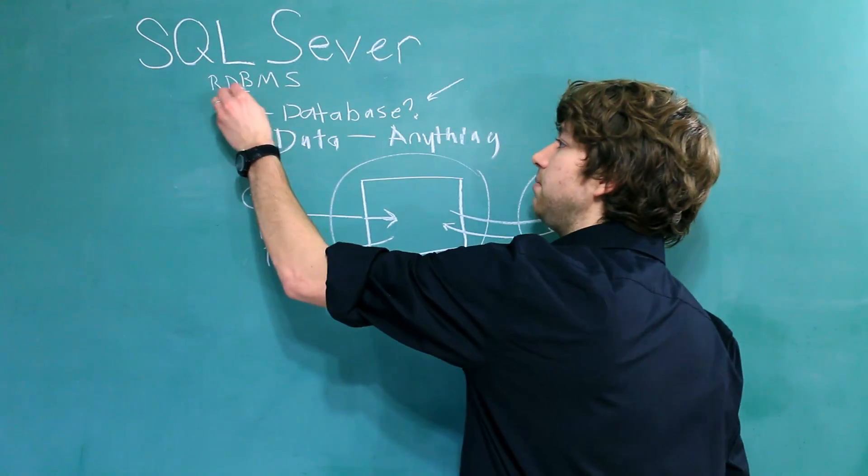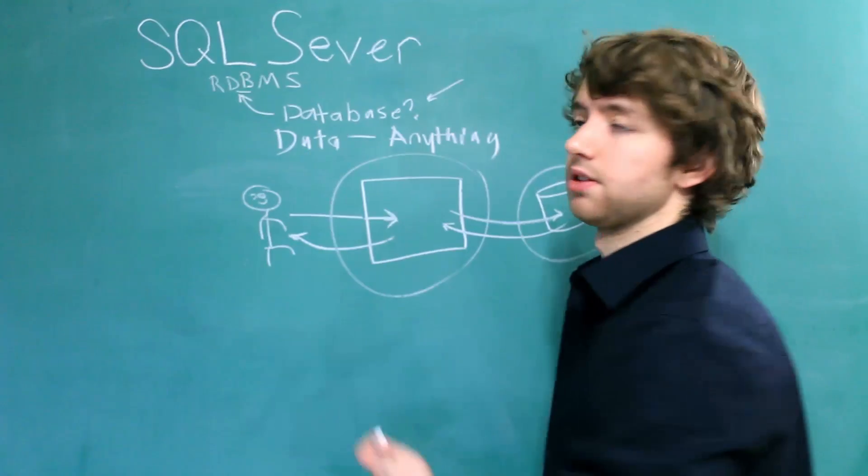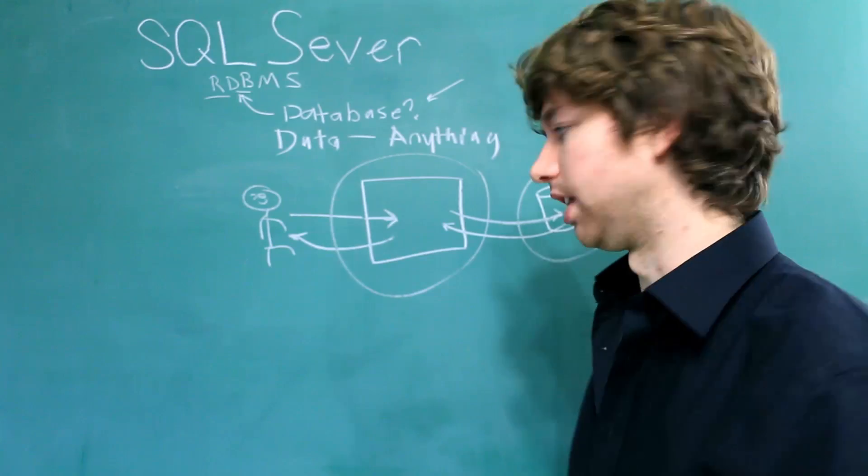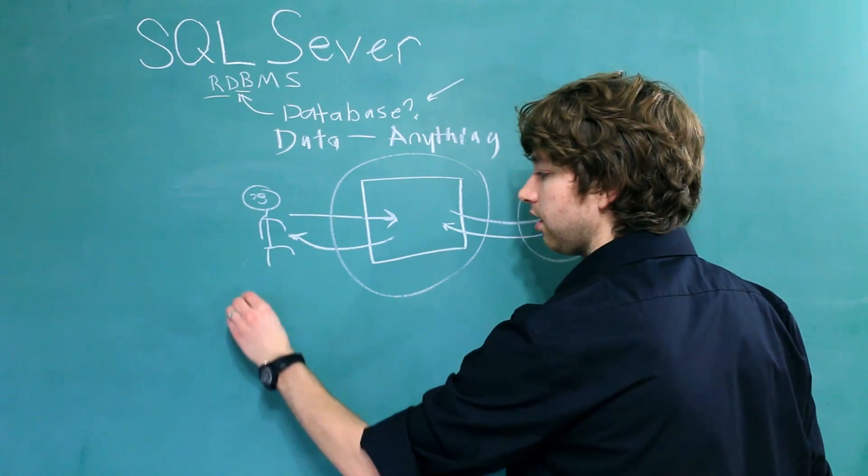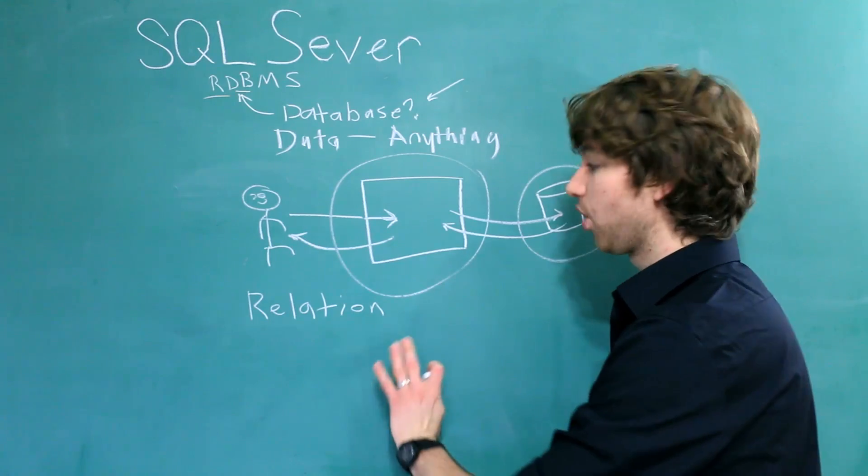So we covered the DB inside of this acronym, Relational Database Management System. But what does the R mean? That means relational. What does that mean? Well, a relation is basically a fancy word that means table. Quite fancy.